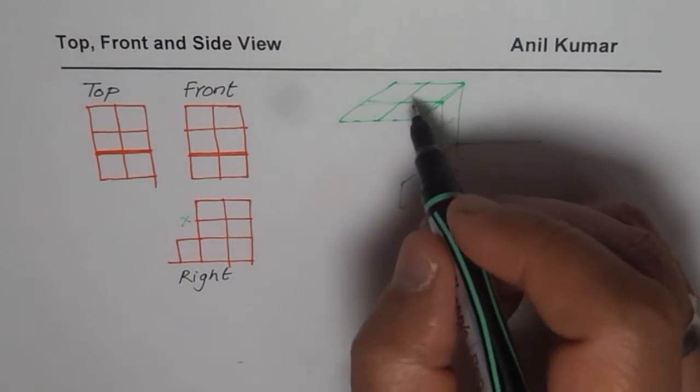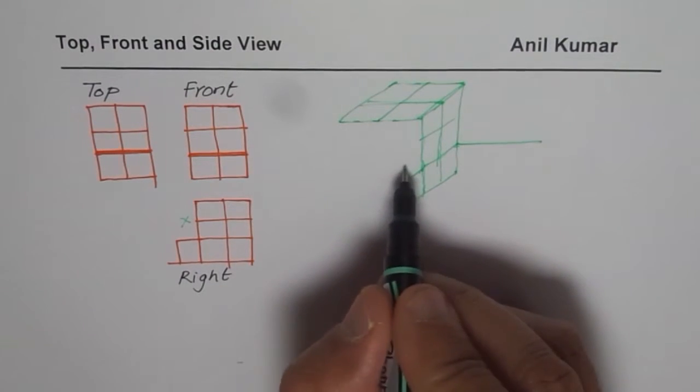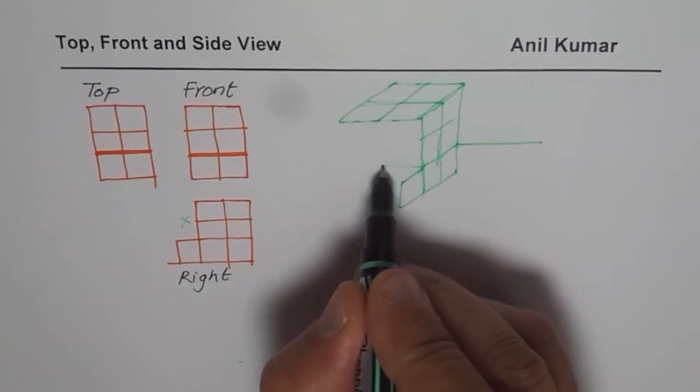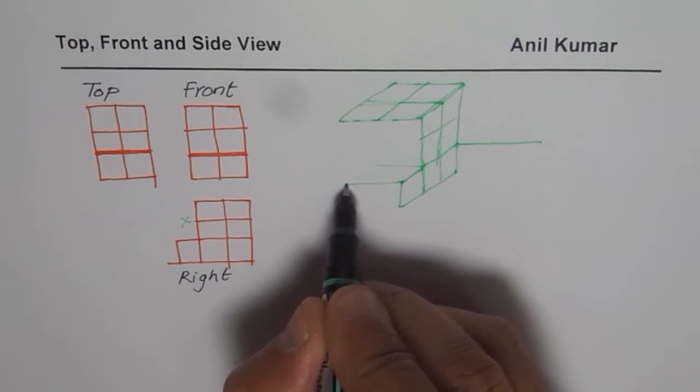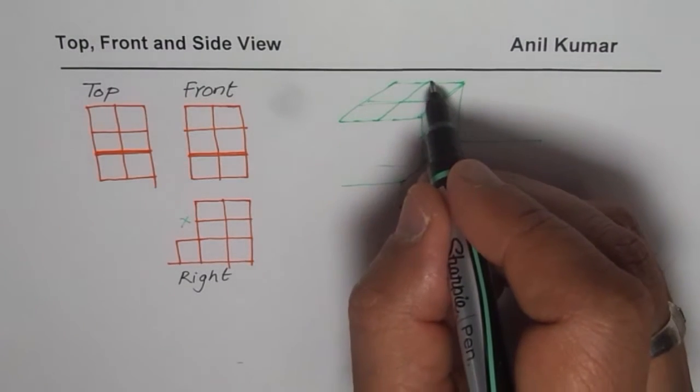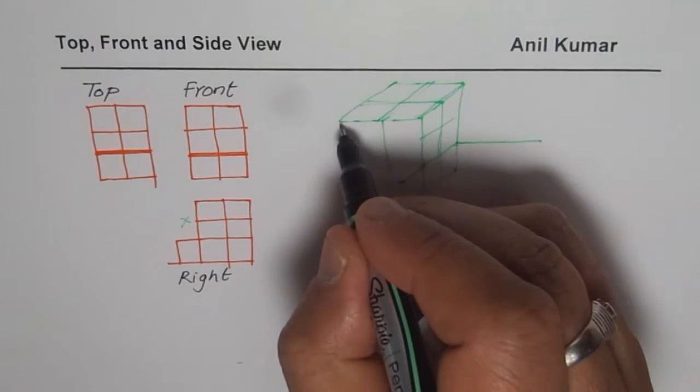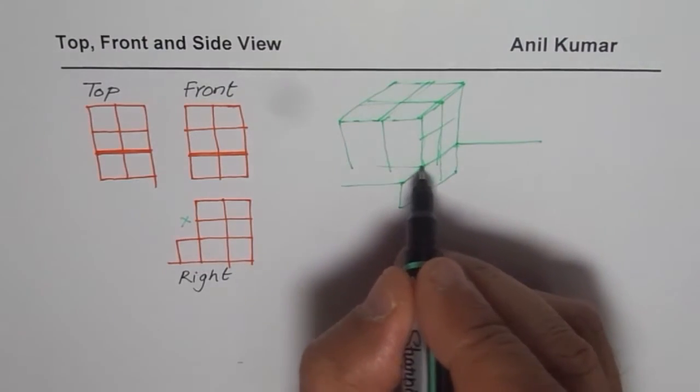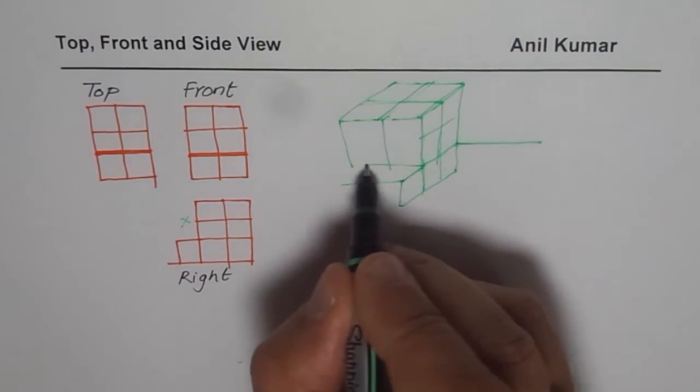That means that this is a solid block. So we could go two blocks like this. It is slightly bigger than what I should have drawn anyway, but you get the idea. So now we have to draw a horizontal line like this here.